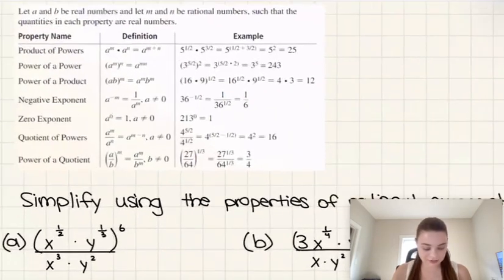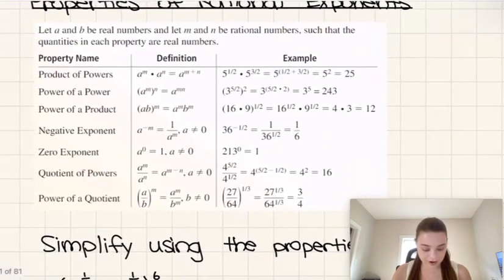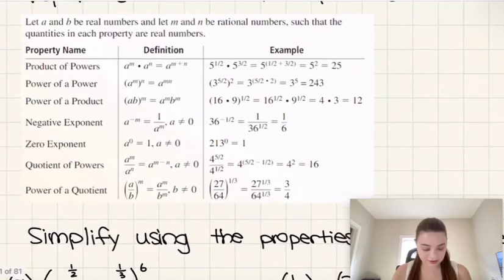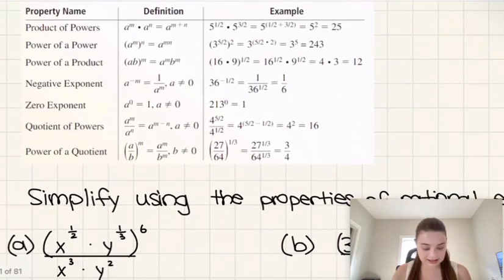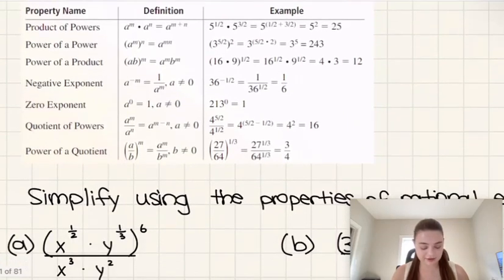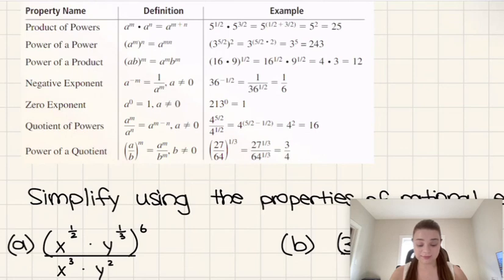So let's quickly review what the properties are. The first one is the product of powers, which says that if we multiply two powers with the same base, we add up those exponents.